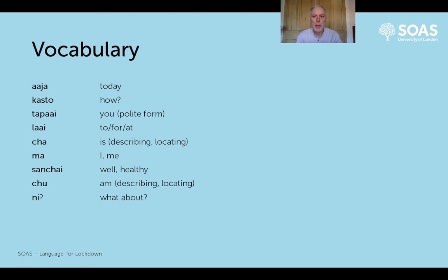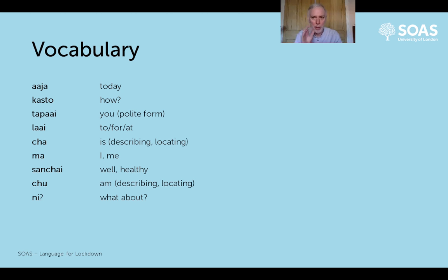'Ni' is a little word that you put on the end of something to often mean 'you know, what about this?' or to say 'oh, you know what I mean, don't you?' Nepali has a lot of these little words that inflect or give a slightly different tone to a statement or a question.